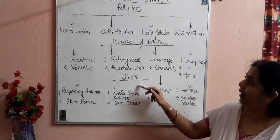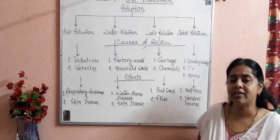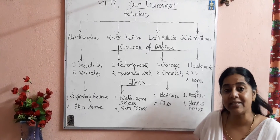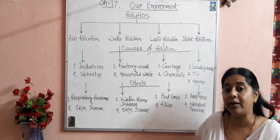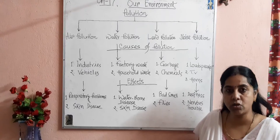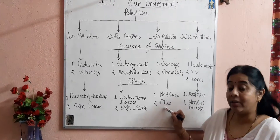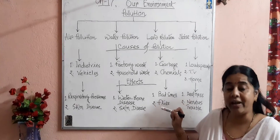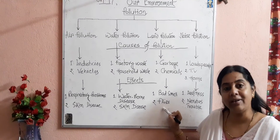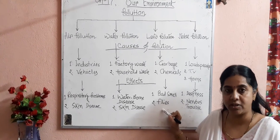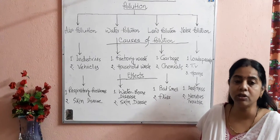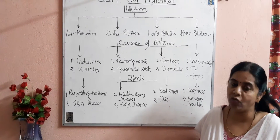The bad effects of land pollution: heaps of garbage make the place look very dirty and a bad smell comes from the garbage. That place becomes a breeding ground for small insects like mosquitoes, flies, and other insects, which also cause different types of diseases.